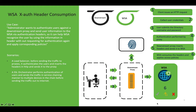Another use case is where SSL termination happens in a device which later performs authentication of users and sends the traffic in a service chaining manner to multiple devices before sending traffic out to the internet. The common theme is that downstream devices perform authentication and send it to the upstream proxy, where the information is consumed from headers, eliminating the need for authentication again. WSA can consume X-Authenticated-User and X-Authenticated-Group headers for user identification and policy application. This is how the message flow looks like in the header consumption use case.